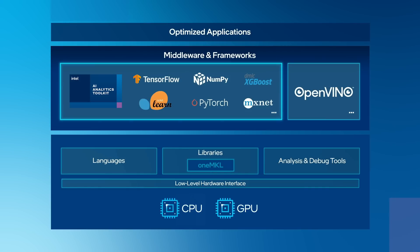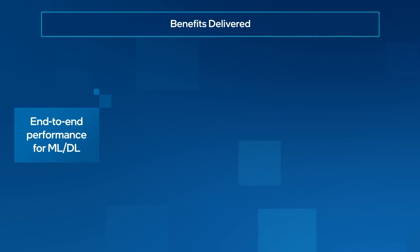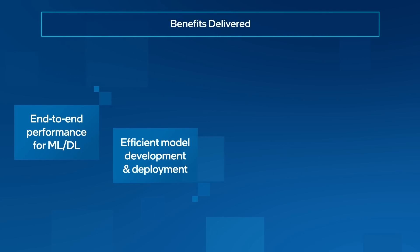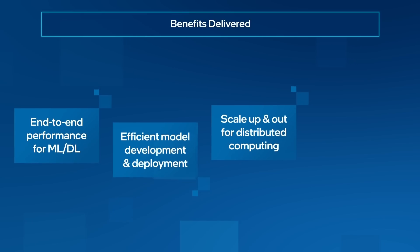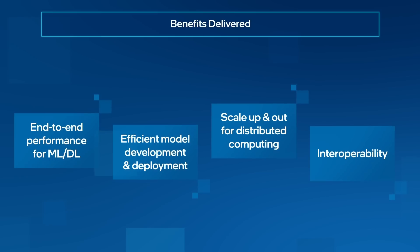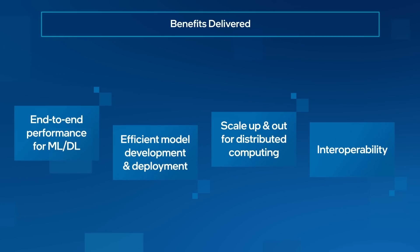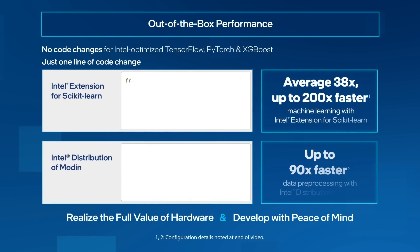Toolkit components built with OneAPI libraries optimize low-level compute on CPUs and GPUs. As a result, users get high performance for end-to-end machine and deep learning, fast and accurate training and inference, the ability to scale up and scale out seamlessly, and interoperability with Intel's latest optimizations in a single integrated package.